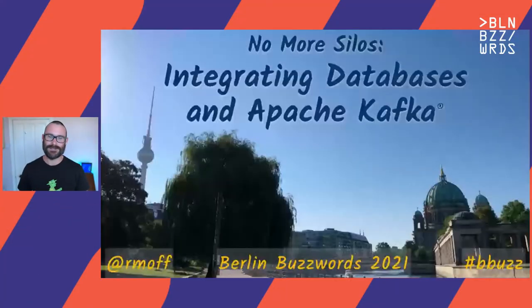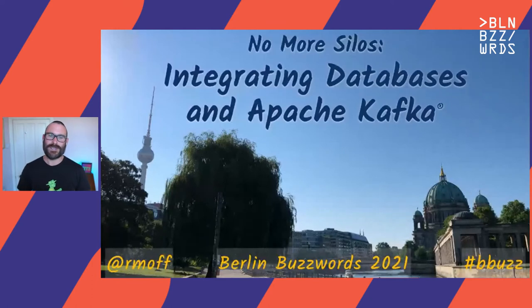My name is Robin Moffat. I work at Confluent, one of the companies behind the open-source Apache Kafka project. I wish I was in Berlin today — it's glorious sunshine in Yorkshire, but I'm sure it's glorious skies like this in Berlin too. But we're stuck at home at the moment.